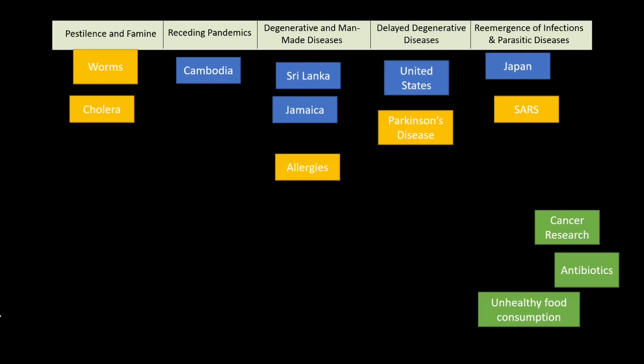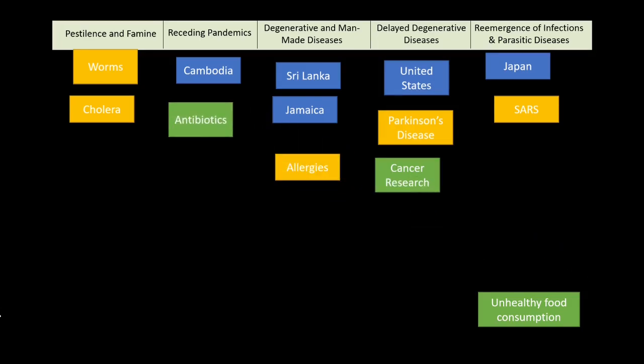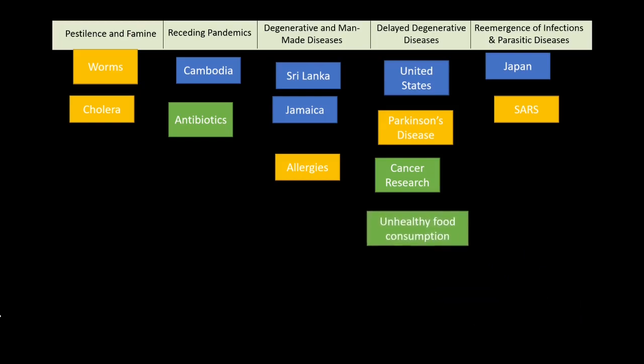Cancer research is stage four. We have tons of medical research in our stage four countries, and cancer is increasing there more than in stage three countries, so they put research into preventing and treating it — for example, wear sunscreen to prevent skin cancer. Antibiotics are going to be stage two — we start to see a way to protect against bacterial infections, which antibiotics help treat as opposed to viral infections, so bacterial infections start to recede. Unhealthy food consumption is stage four — eating pudding cups or McDonald's every single day.